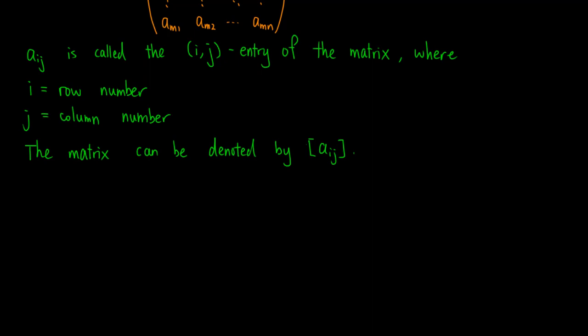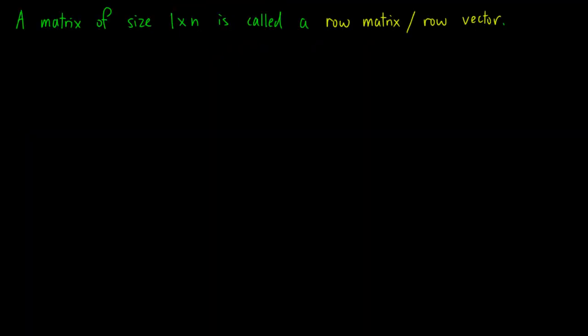There are three types of matrices of special sizes which are worth mentioning. The first one is a matrix of size 1 by n. It is called a row matrix or row vector, because it consists of only one row. For example, the matrix 1, 4, negative 2, 3, 7, arranged as a row, is a row matrix of size 1 by 5.